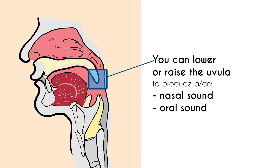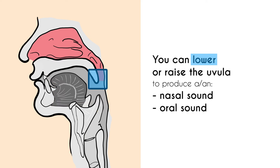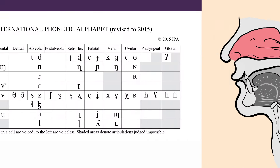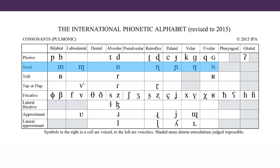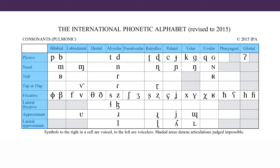The uvula can be raised to block the nasal cavity, in which case the sound will be entirely oral. Or it can be lowered to allow air to pass through the nasal cavity, in which case the sound is nasal. If you look at the nasal sounds in the consonant chart, during the production of all of those sounds the uvula is lowered and air passes through the nasal cavity.